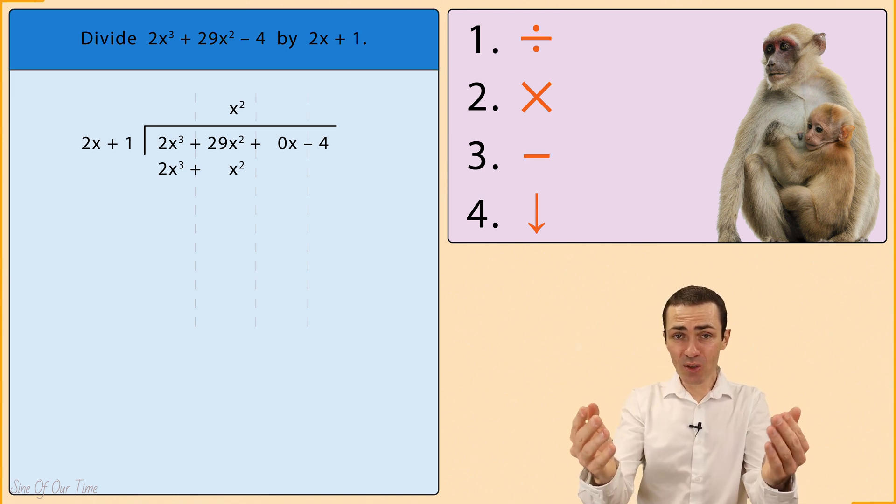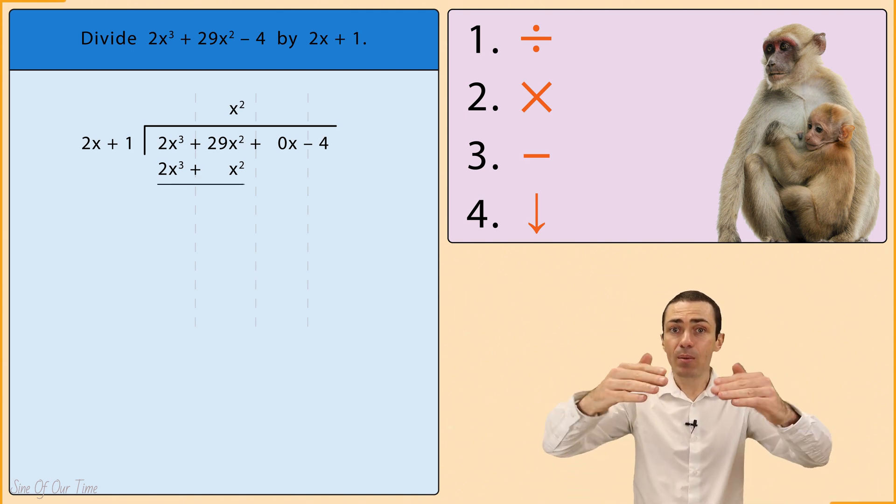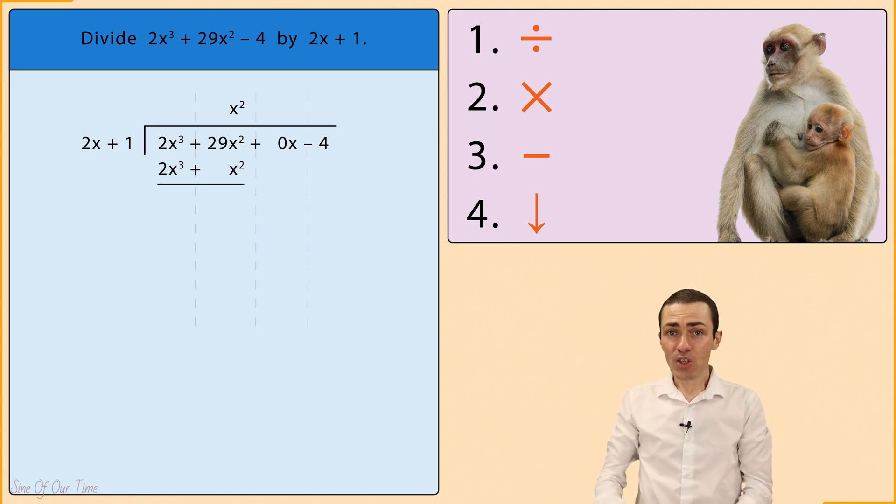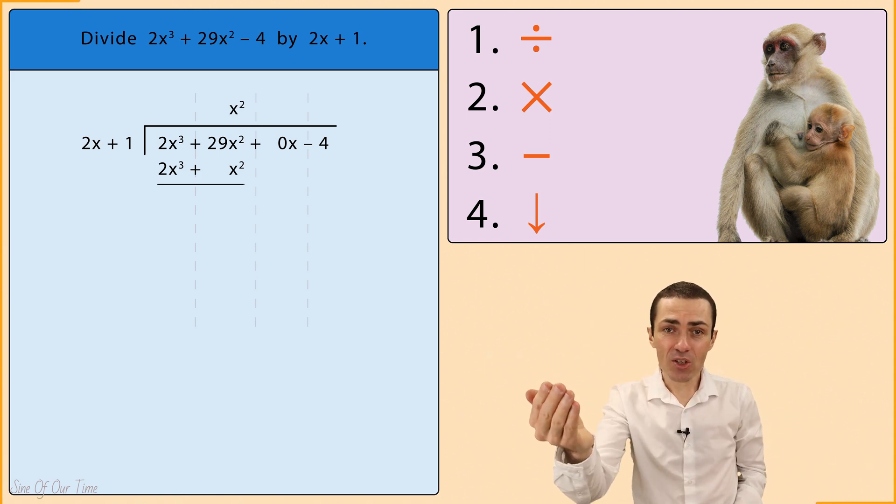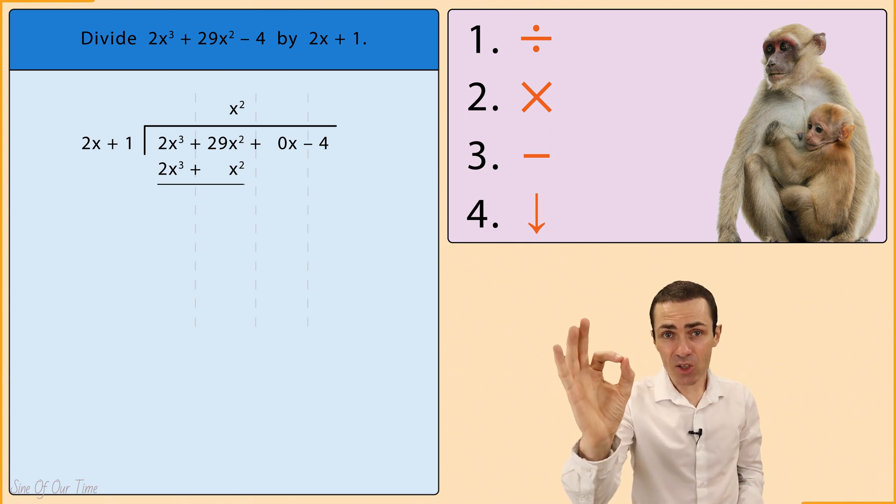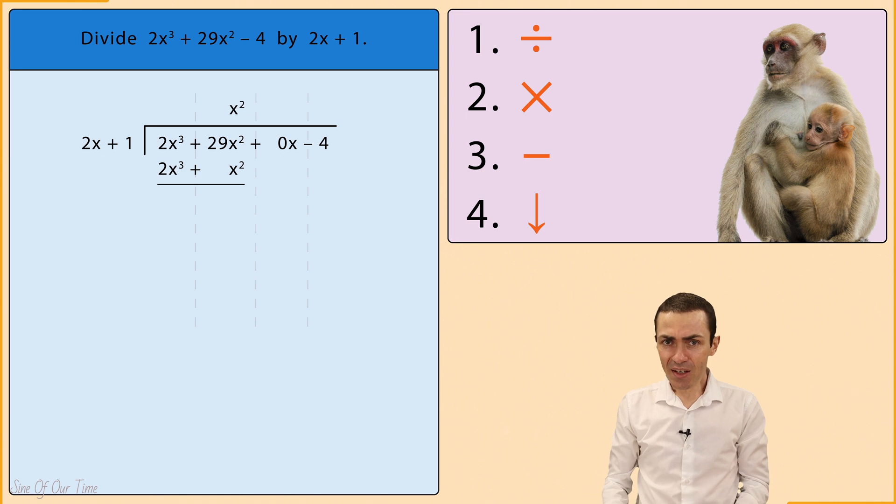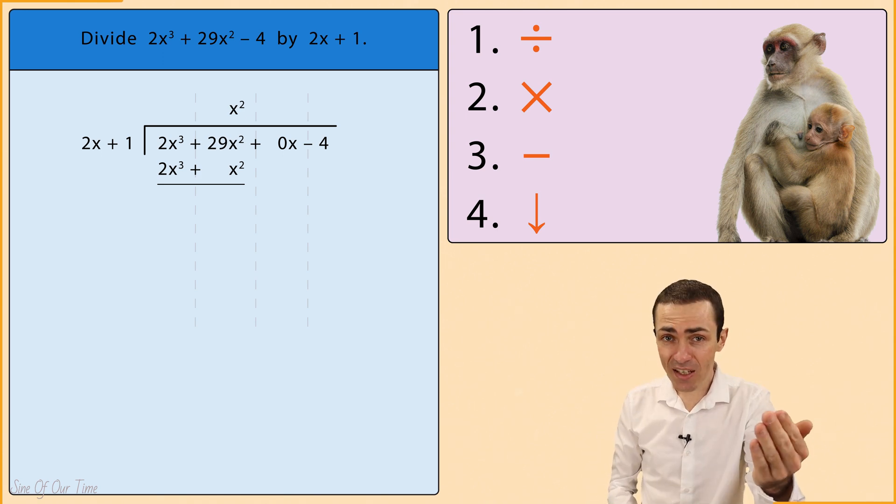Before we do the subtraction, we draw a line under 2x cubed plus x squared and we put the results of the subtraction below that line. Starting in the first column, 2x cubed subtract 2x cubed gives us 0x cubed, but it's not necessary to write this down. And then in the next column, we have 29x squared subtract x squared gives us 28x squared.